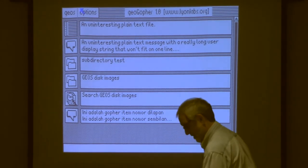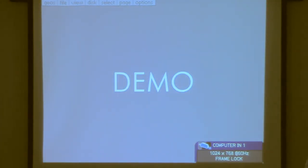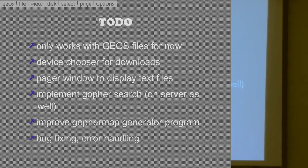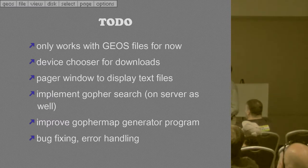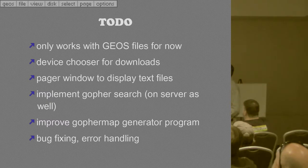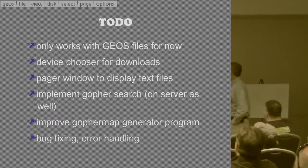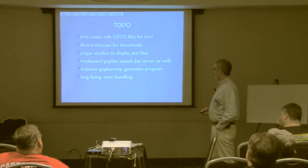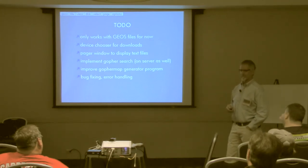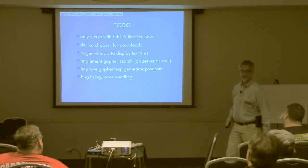So that's it. There's a bit more to come — I want to add search, I want to add download and paging of text files. Right now it only works with GEOS files; I've got to add a device selector for where to download to. I want to add a pager window and Gopher search. On the server side I have a program that generates Gopher maps, which is touchy because of the tab characters. And of course bug fixing, plus better error handling. But all of this is just a matter of a few weeks' work — the hard part is done, and the hard part was streaming that stuff over the wire and getting a GEOS file out the other end.